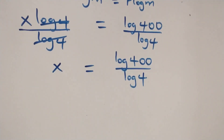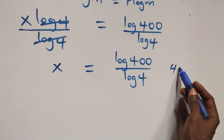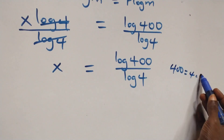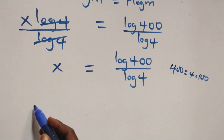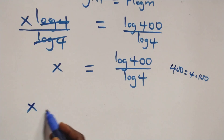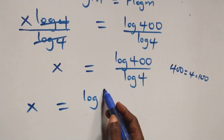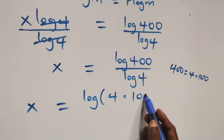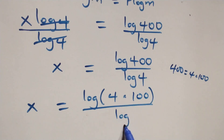And we have x equals to log 400 over log 4. The next step here, we can also write 400 as 4 times 100, so what we have here becomes x equals to log of 4 times 100 over log 4.